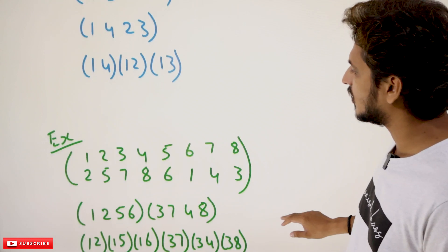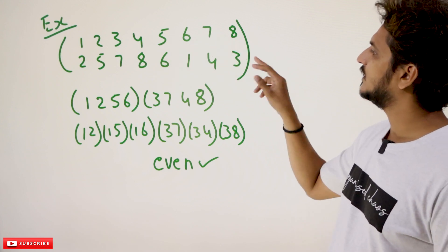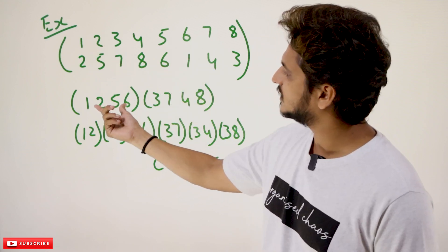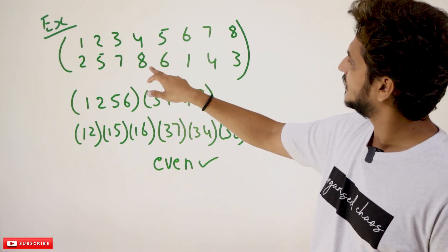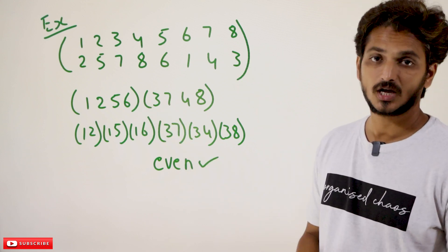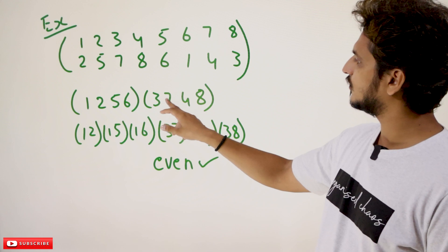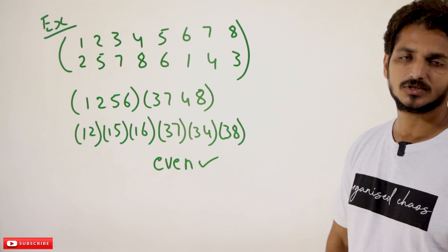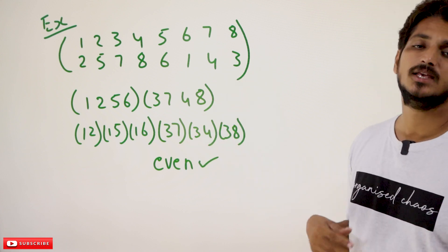One more example on even and odd permutations. P: 1→2, 2→5, 3→7, 4→8, 5→6, 6→1, 7→4, 8→3. This gives two cycles: (1 2 5 6) and (3 7 4 8). Converting to transpositions: (1 2)(1 5)(1 6)(3 7)(3 4)(3 8) — six transpositions in total. Since six is an even number, we call this an even permutation.